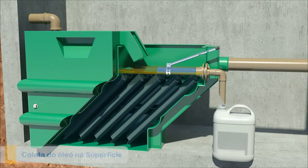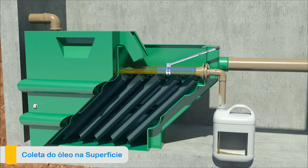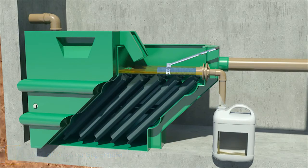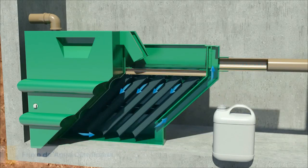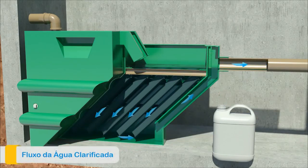Excess oil should be drawn through the manifold, which will carry it up to an oil storage tank. The water will continue its course, leaving free of oil by the bottom of the module, ready to be discarded.